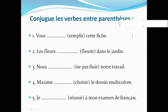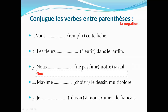Let's talk about negation — how to put a verb in the negative form. For example, take question number three. The subject is 'nous,' so the verb 'finir' becomes 'finissons' (f-i-n-i-s-s-o-n-s). Since 'ne...pas' is indicated, before the conjugated verb you write 'ne,' and after the verb you write 'pas.'